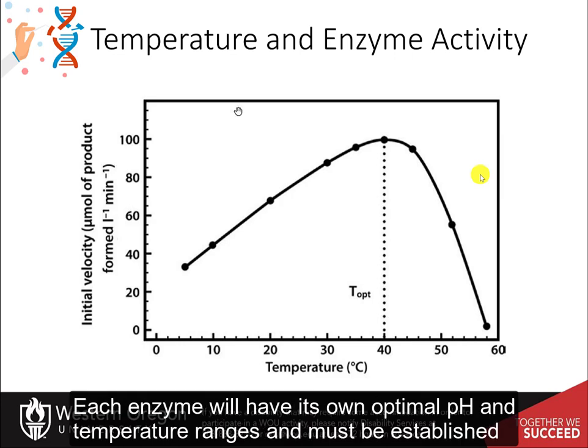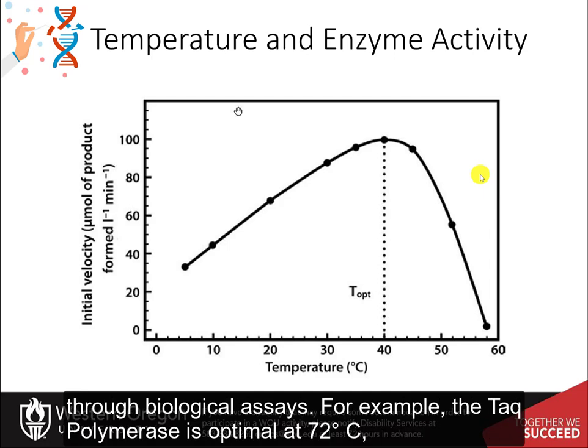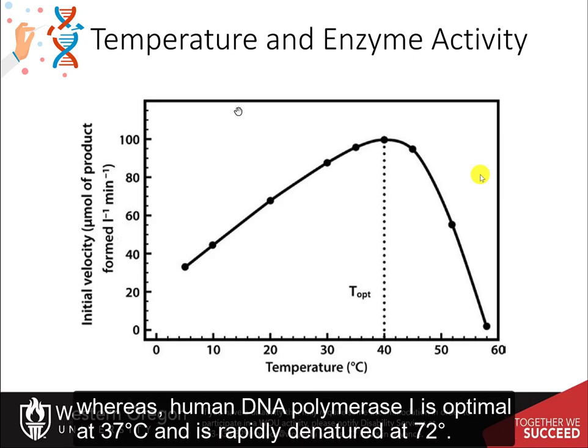Each enzyme will have its own optimal pH and temperature ranges that must be established through biological assays. For example, the Taq polymerase is optimal at 72 degrees Celsius, whereas human DNA polymerase one is optimal at 37 degrees Celsius and is rapidly denatured at 72 degrees.